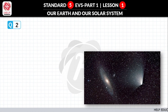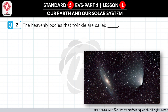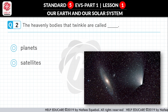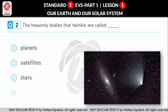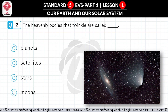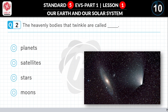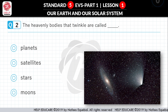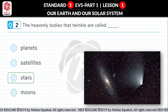Question No. 2: The heavenly bodies that twinkle are called dash. First option: Planets. Second option: Satellites. Third option: Stars. Fourth option: Moons. Correct answer is Stars.